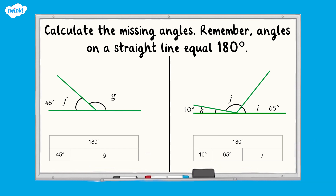All complete? Well done. Let's have a look at the answers. To calculate angle G, we need to subtract 45 degrees from 180 degrees, which is equal to 135 degrees. So the missing angle is therefore 135 degrees.